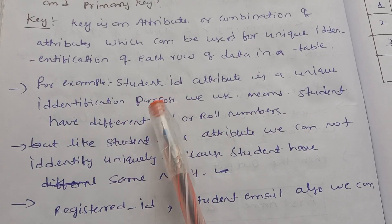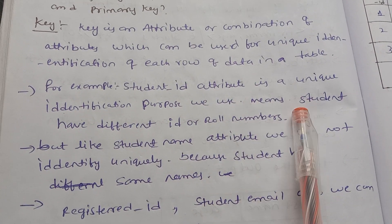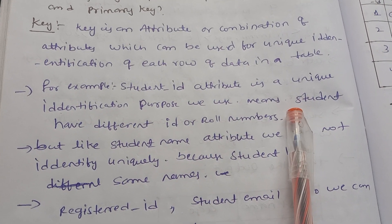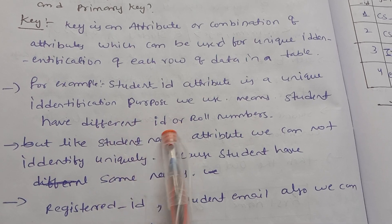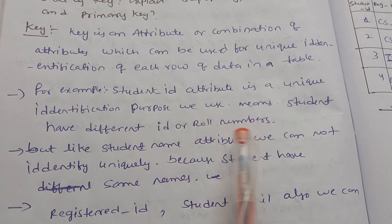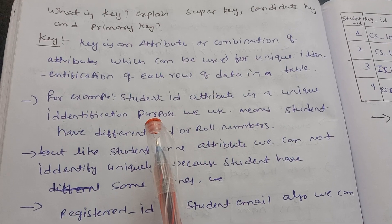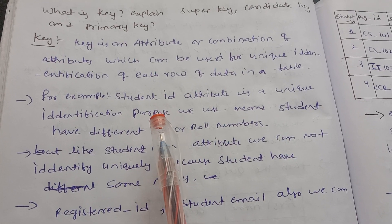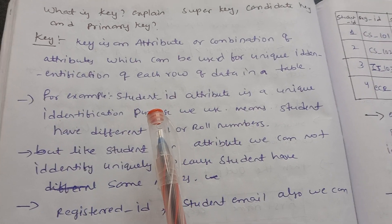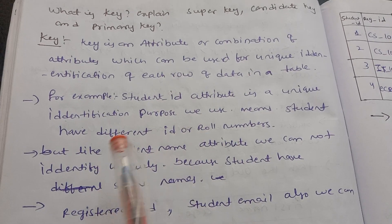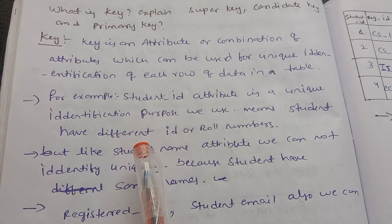For example, a student ID attribute is used for unique identification purposes. Students have different IDs or roll numbers, so student ID can uniquely identify each student.